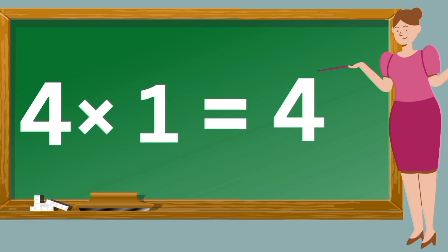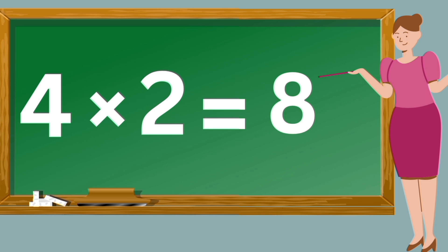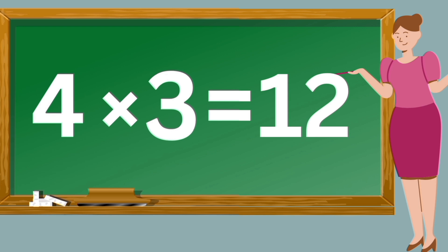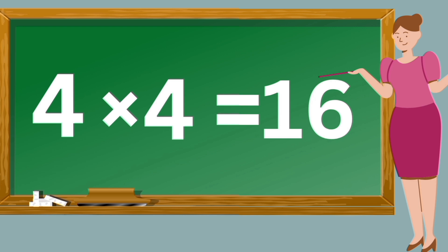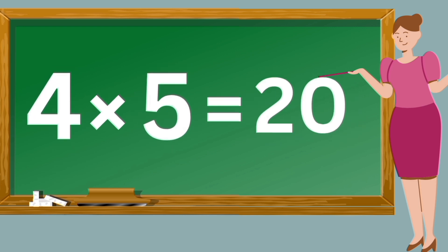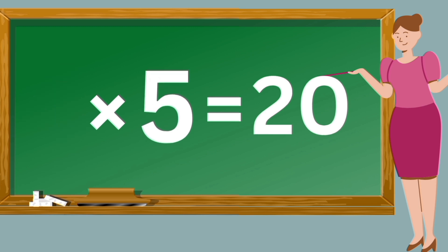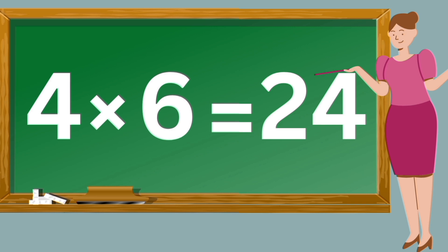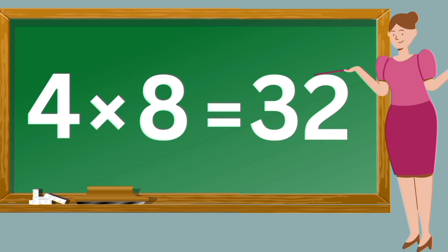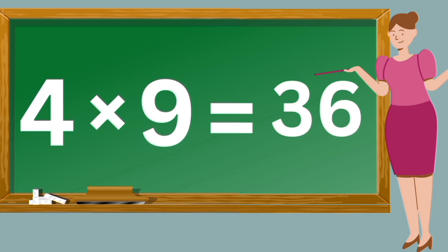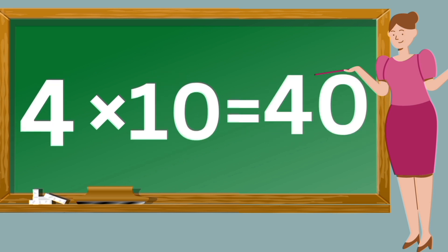Four ones are four. Four twos are eight. Four threes are twelve. Four fours are sixteen. Four fives are twenty. Four sixes are twenty-four. Four sevens are twenty-eight. Four eights are thirty-two. Four nines are thirty-six. Four tens are forty.